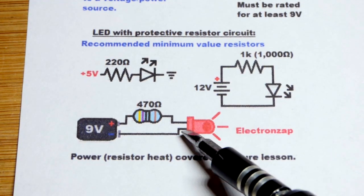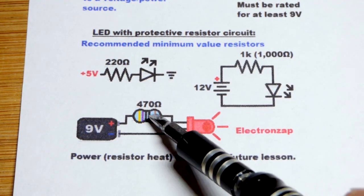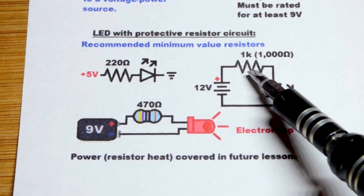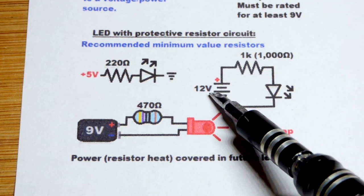There you can see the shorter lead going to the negative side of a 9-volt battery. 470 ohms will protect an LED pretty nicely from 9 volts, and 1000 ohms (1k, 1 kilohm) will protect an LED pretty nicely from 12 volts.